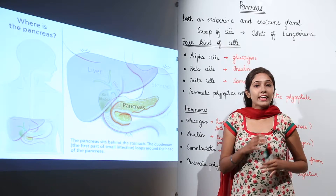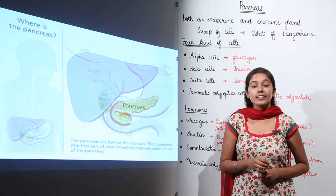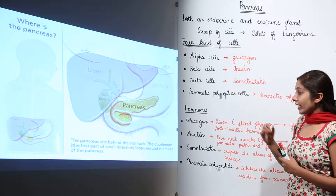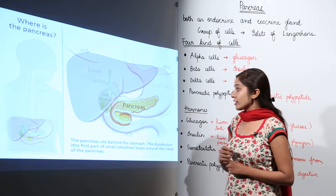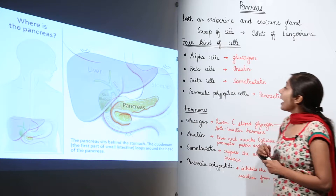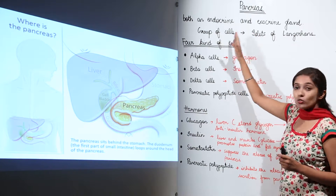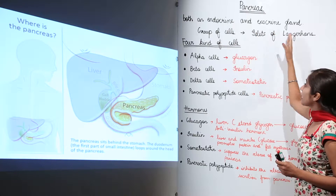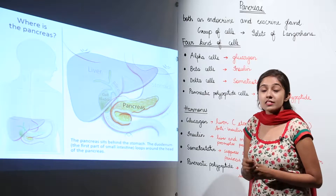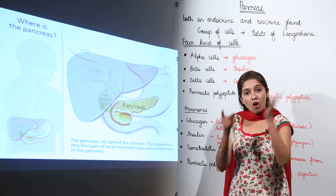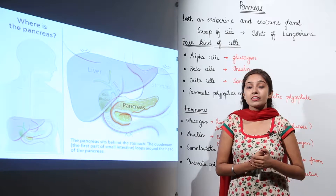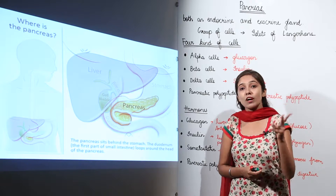Now let's talk about the next gland, that is the pancreas. The pancreas is located just behind the stomach. Pancreas is both an endocrine gland and an exocrine gland, so they come under the category of heterocrine glands, because besides the secretion of hormones they have other functions also. That is why we call pancreas as heterocrine glands, because they perform dual functions.